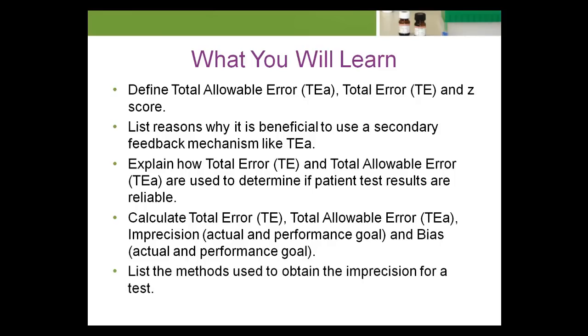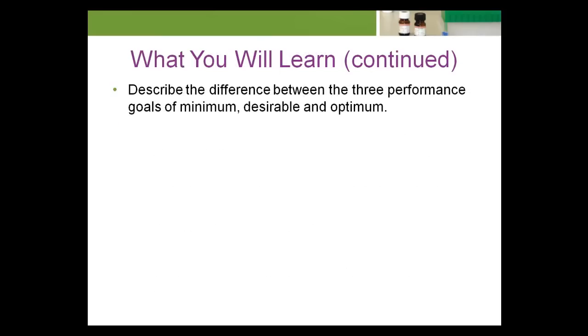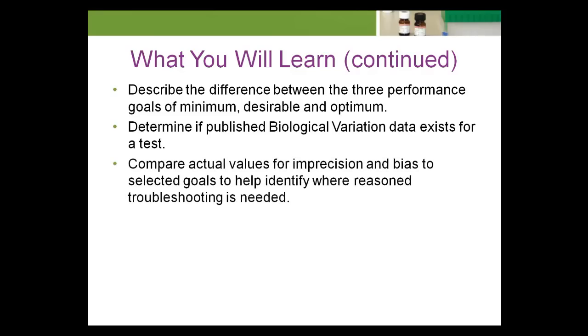List the methods used to obtain the imprecision for a test. Describe the difference between the three performance goals of minimum, desirable, and optimum. Determine if published biological variation data exists for a test. Compare actual values for imprecision and bias to selected goals to help identify where reasoned troubleshooting is needed.